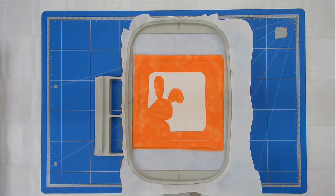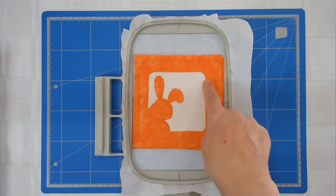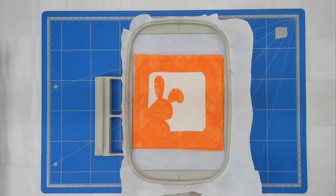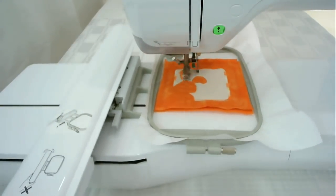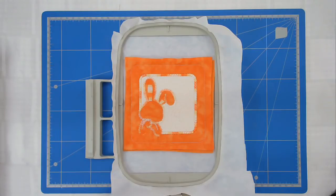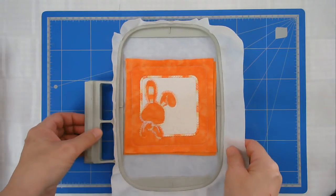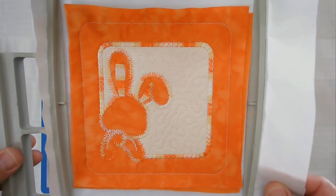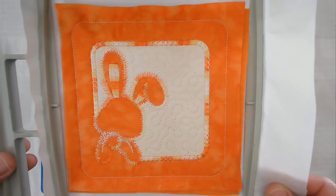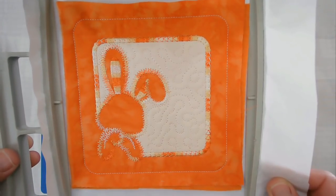I've loaded my variegated thread into my machine and I'm now going to stitch round number five which is going to do the decorative zigzagging all the way around the rabbit and the outside of the background. I'll just take this out of my machine so that you can see the decorative stitching there. It's probably difficult to see with a variegated thread but it really does look nice.